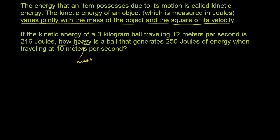Let's think about what they tell us in this first paragraph. The kinetic energy of an object — I'll call that energy with a small k to indicate kinetic energy. I won't focus on the units here because the point of this is not to be a physics problem; the point is for you to understand joint variation, without introducing dimensional analysis that might confuse things.